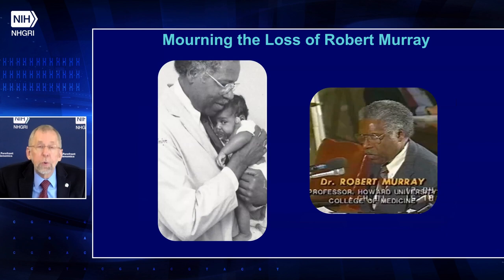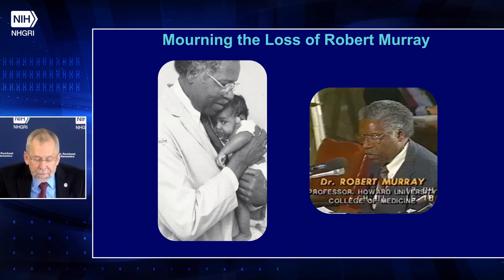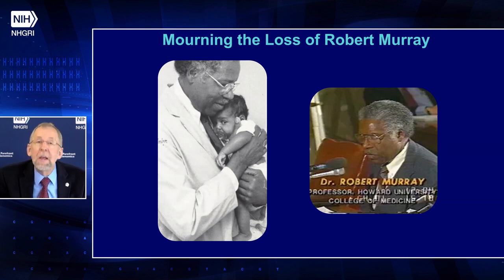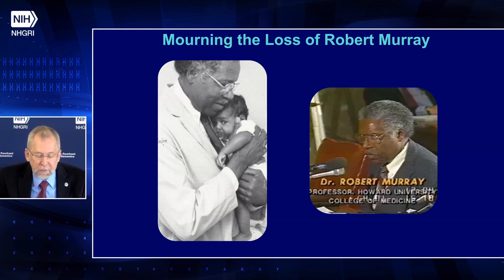Haig Kazazian was a professor of pediatrics and molecular biology and genetics at Johns Hopkins University School of Medicine, where his research group focused on the biology of LINE-1 retrotransposons. He made discoveries about the genetic basis of an array of hemoglobinopathies and was named as one of the first plaintiffs in the Supreme Court's 2013 ruling that companies cannot patent parts of naturally occurring human genes. Finally, on January 21st, Robert Murray passed away at the age of 90. He was a professor of pediatrics and genetics at Howard University and served on the very first joint working group on ELSI, which made initial recommendations about many issues eventually studied by NHGRI's ELSI research program.